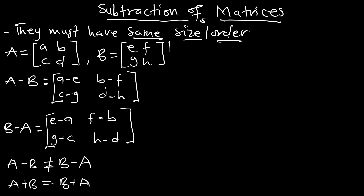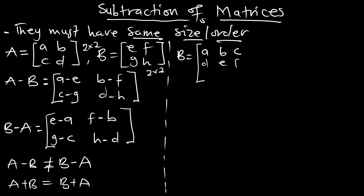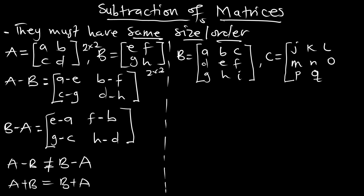The same way we can perform the subtraction for a 3 by 3 matrix. Here we can check the order — this is a 2 by 2 and this is also a 2 by 2, meaning we can do the subtraction. Now let's look at matrix B with elements A, B, C, D, E, F, G, H, I, and matrix C. We have these matrices and we have to find B minus C.